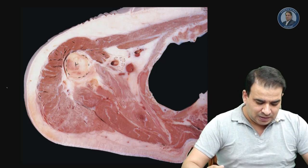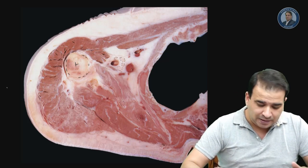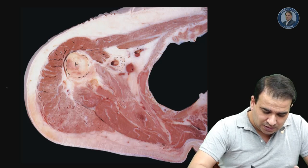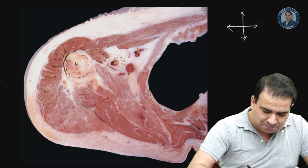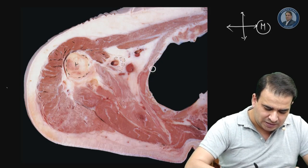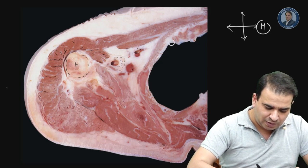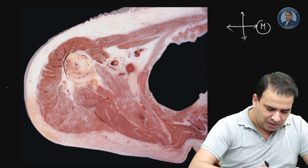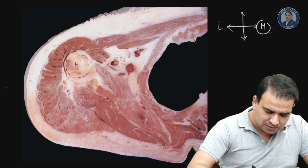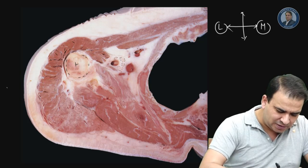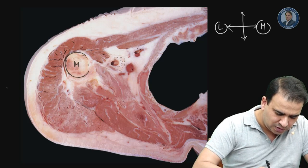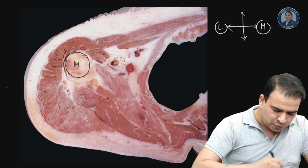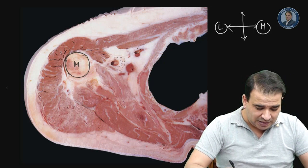Starting off, this is the transverse section of the axilla. For side orientation: this is the medial side because that's a part of the rib you're looking at here. This is the lateral side because you can see the section of the humerus bone here, which tells you that is the lateral side. So we can identify anterior and posterior from there.